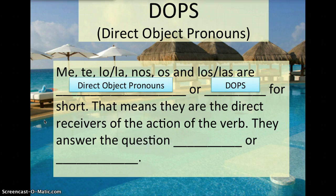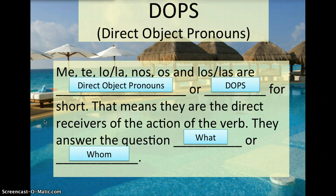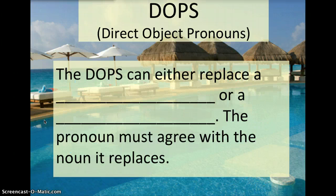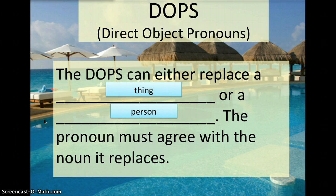So what does this mean? It means that they are the direct receivers of the action of the verb. They're going to answer the question what or whom, which will make more sense in just a second as we practice. DAPs can either replace a thing or a person. The pronoun must agree with the noun that it's going to replace.